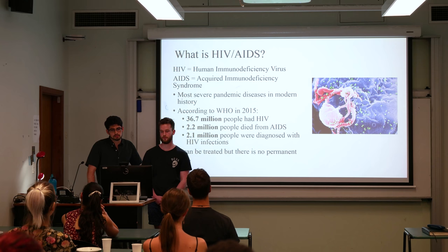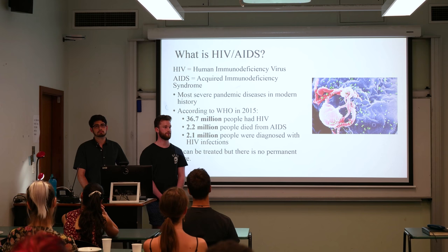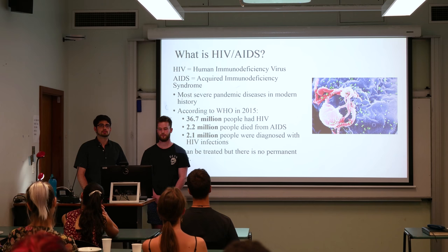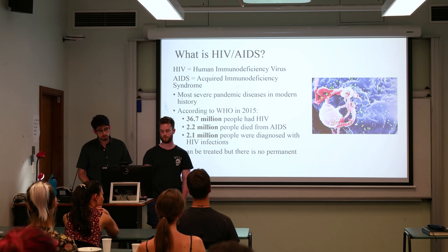According to the World Health Organization in 2015, 36.7 million people had HIV. In that very same year, 2.2 million people died from AIDS and another 2.1 million people were diagnosed with HIV infections. Unfortunately, this horrible illness can be treated but there is no permanent cure, so it is vital that we do find one.